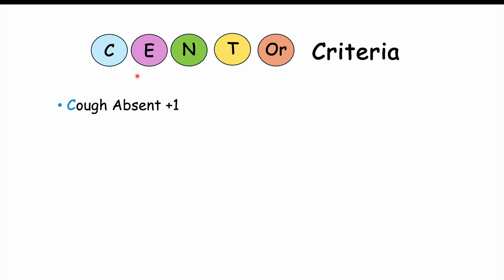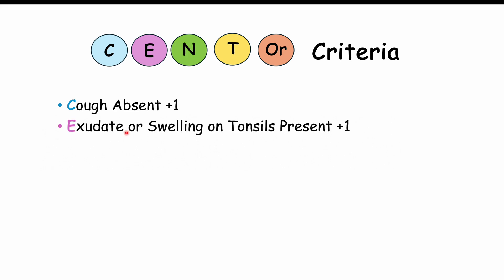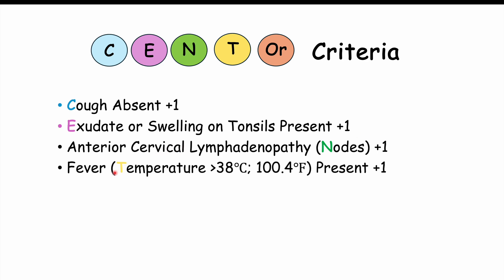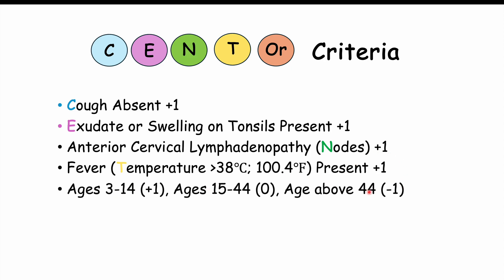Here is the Centor criteria scoring: if cough is absent, that's plus one point. If there is exudate or swelling on the tonsils — either whitish material or swollen pharyngeal tonsils — that's another point. Anterior cervical lymphadenopathy with tender lymph nodes gives another point. A fever greater than 38 degrees Celsius or 100.4 degrees Fahrenheit adds another point. For age: between 3 and 14 years gives one point; between 15 and 44 years gives no points; and above age 44 is a negative one point. The mnemonic is CENT — C for cough, E for exudate, N for nodes, T for temperature — and OR for the age groups.